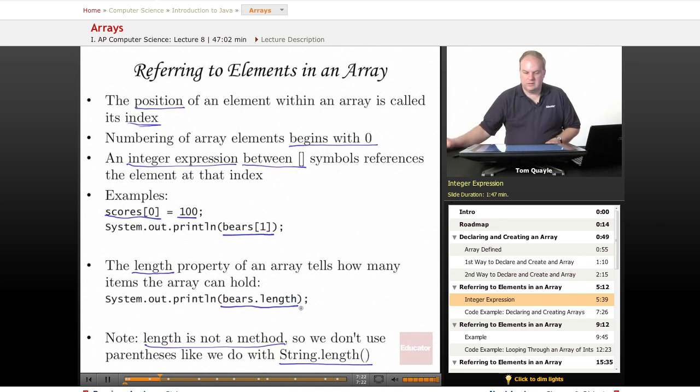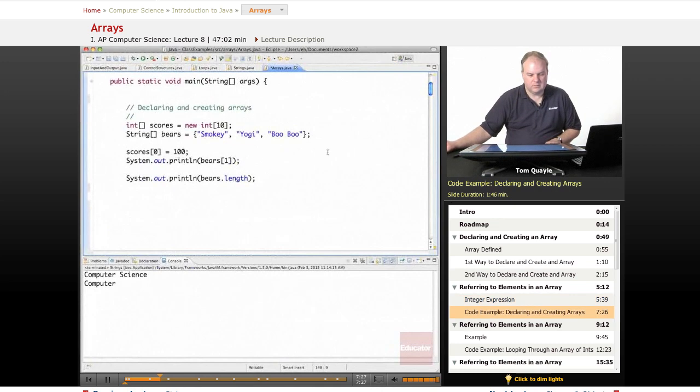So let's take a look at referring to elements in an array in some actual Java code. Here I have the same two arrays that I showed. I have an array of integers called scores, and I instantiate that with the new keyword and provide a size of 10, which is going to give me positions from 0 through 9. Then I have an array of strings called bears, and I instantiate that with these three strings. And that tells the computer that I want to have an array of size 3 with positions numbered from 0 through 2.